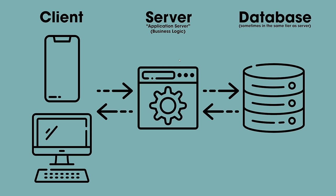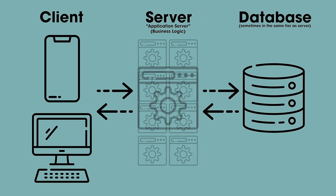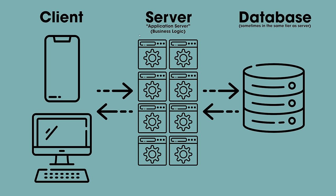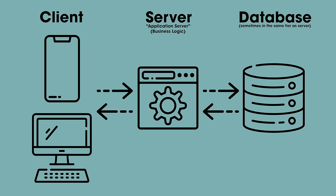And finally, you have n-tier, which is anything more than a three-tier application. This typically takes into consideration the single responsibility principle, where each individual component lives on its own machine. So if you have five or ten different components in terms of business logic, you're going to have five or ten different machines just to cover this. For this example, we're sticking with a three-tier application.